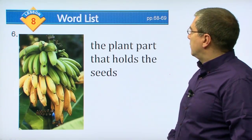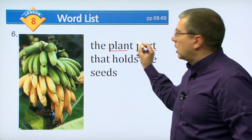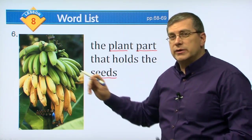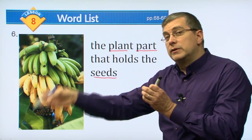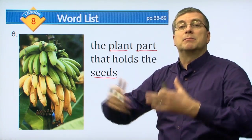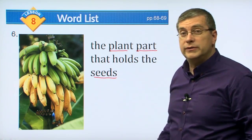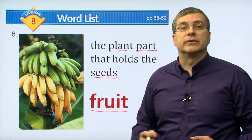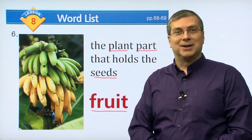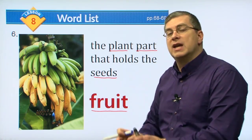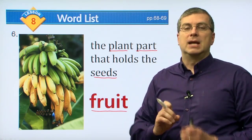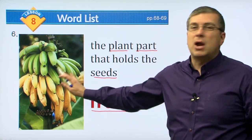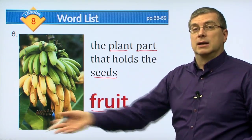Another word we have here is the plant part that holds the seeds. Seeds are what the plant makes; they go into the ground and make a new plant. What do we call the part of the plant that holds the seeds? For many plants it's called the fruit. Bananas are a type of fruit. Apples are a type of fruit. Watermelon is a type of fruit. They all have seeds in them, and if you take those seeds and put them in the ground, a new plant will grow. Many plants have fruits and that's how they distribute their seeds.